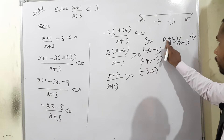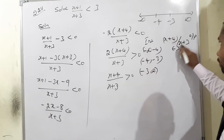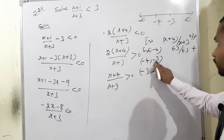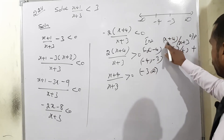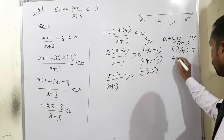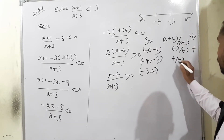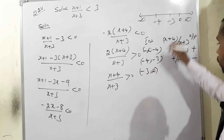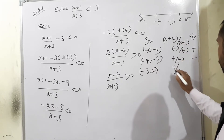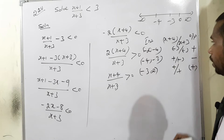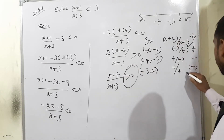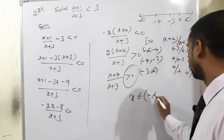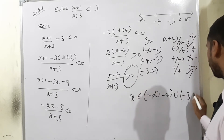Testing each interval: For (-∞,-4), take x=-5: (-5+4)/(-5+3) = (-)/(-) = positive. For (-4,-3), take x=-3.5: (-3.5+4)/(-3.5+3) = (+)/(-) = negative. For (-3,+∞), take x=0: (4)/(3) = positive. Since condition is >0, first and last intervals satisfy it.